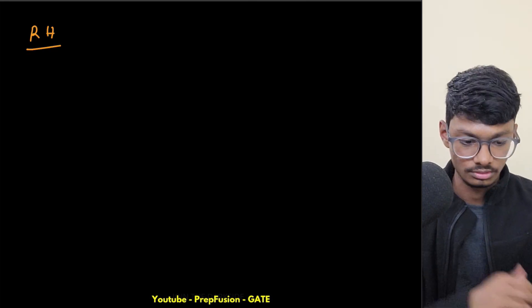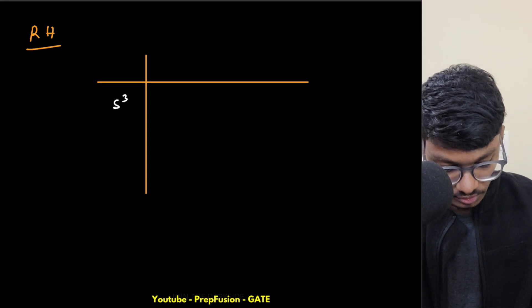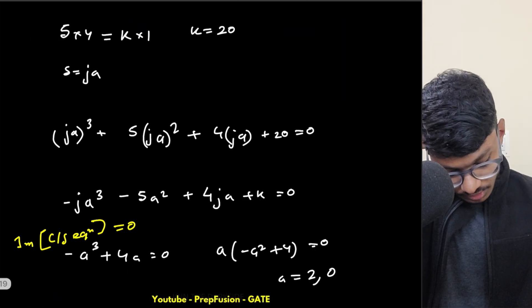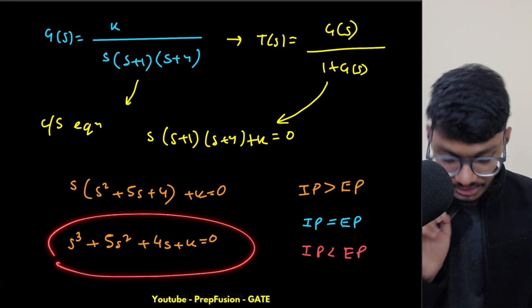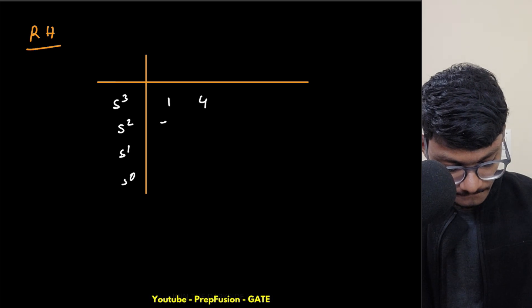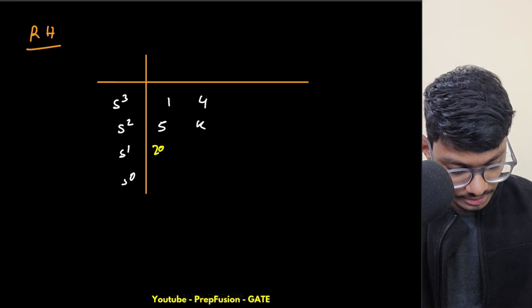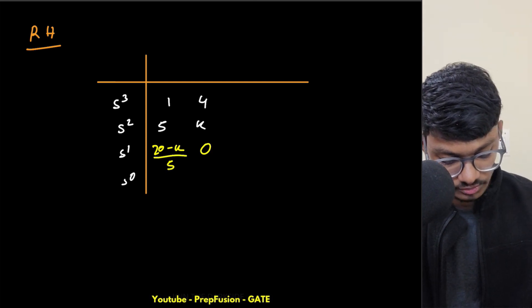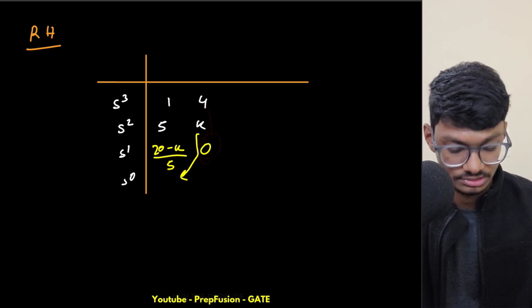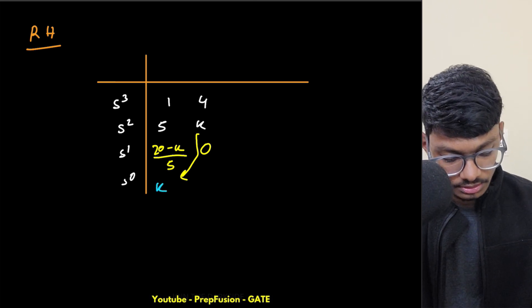Now for the second method — the Routh-Hurwitz array method. Let me write the Routh array. The characteristic equation is s³ + 5s² + 4s + k = 0. Setting up the table: row s³ has coefficients 1 and 4; row s² has 5 and k; the next row s¹ becomes (20 - k)/5 and 0; and the s⁰ row is k.